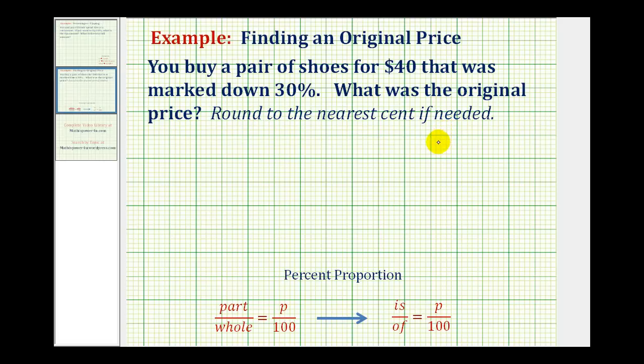One is the percent equation, and the other is the percent proportion. We're going to solve this problem using the percent proportion, which means we'll set up two ratios equal to each other that will have one unknown value, which we can determine by cross-multiplying.